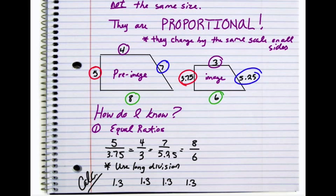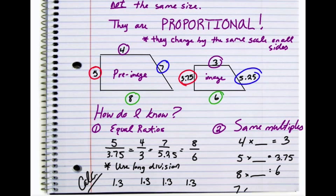The other way you can see if figures are similar is that they have the same multiples. If you multiply a number, the value of a side from the pre-image by the same factor, you should get the value for the post-image. So first, I'll say 4 times a number should equal 3. 5 times that same number should equal 3.75. 8 times that same number should equal 6. And 7 times that same multiple should equal 5.25.